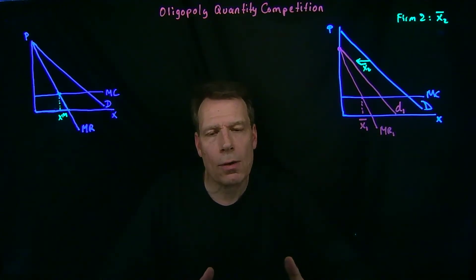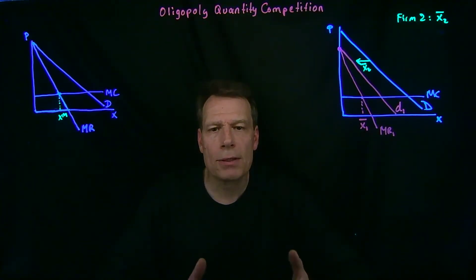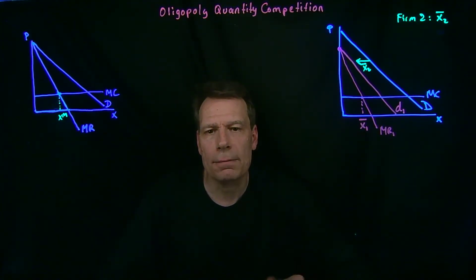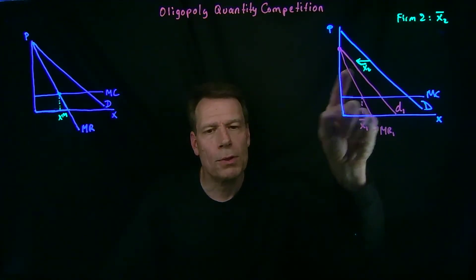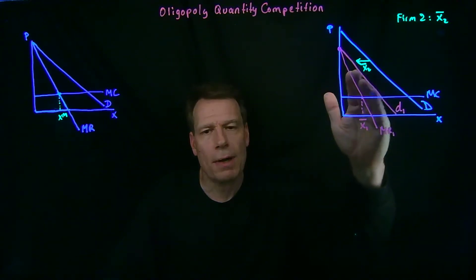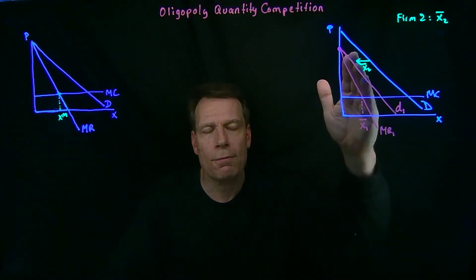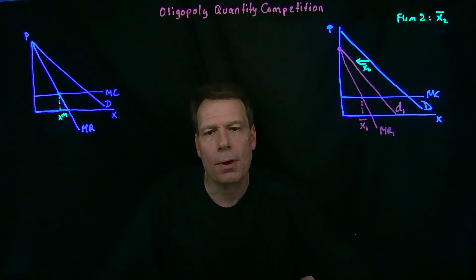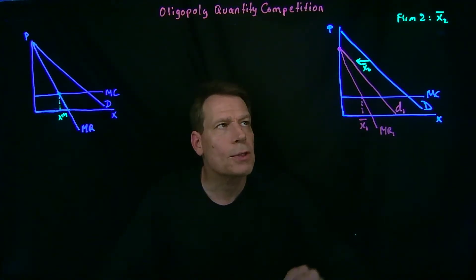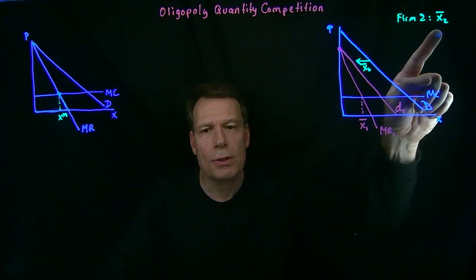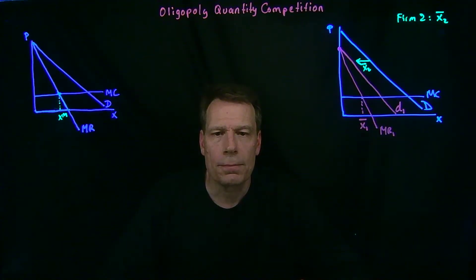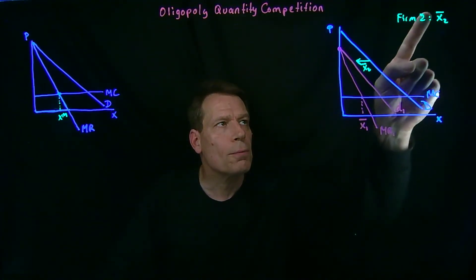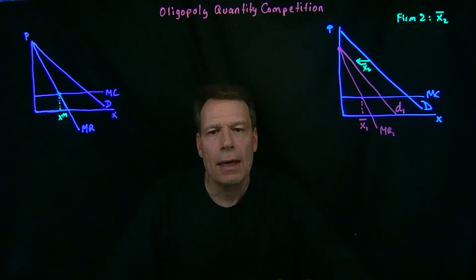Of course we could think about other quantities that firm two could produce and what the best response for firm one would be. If firm two produces less, that green arrow would be shorter, the demand curve wouldn't shift by as much, and so the marginal revenue curve would lie further out and intersect the marginal cost at a greater quantity. In other words, the less firm two produces, the greater firm one's best response will be in terms of how much to produce. Similarly, the more firm two produces, the bigger that arrow is going to be, and the less firm one is going to produce as a best response.